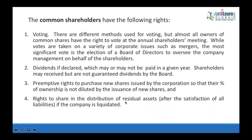Right to share in distribution of residual assets: when the company is liquidated — closed down due to poor performance — all assets are sold. The proceeds are used to pay liabilities: government dues, taxes, unpaid wages, utilities, then bondholders, then preference shareholders. The residual amount, if any, is paid to common shareholders. If the amount is insufficient, common shareholders may receive nothing; if still insufficient, preference shareholders may also receive nothing.